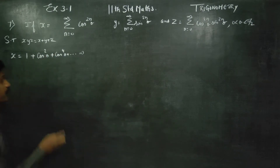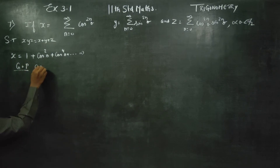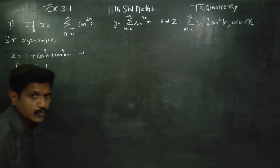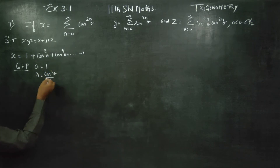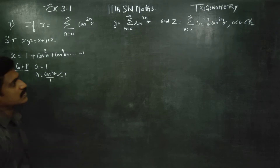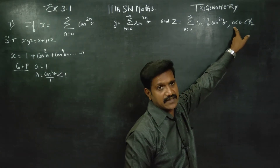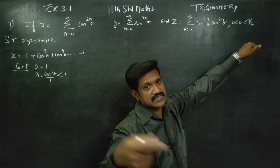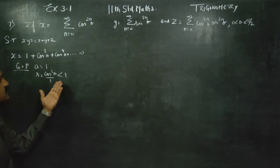It is a geometric progression. My a is equal to 1. Common ratio R is equal to T2 by T1, which is cos square theta by 1. Since cos square theta is less than 1 — cos 0 is equal to 1, but for 45 or 90 degrees the square is less than 1 — your common ratio is less than 1.